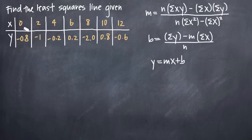So the way that this dataset is written, it tells us that when x is equal to 0, y is equal to negative 0.8. It's basically a set of coordinate pairs. So if x is 2 and y is negative 1, then we have the coordinate pair (2, -1), (4, -0.2), (6, 0.2), etc. So we have all these points, and they're not perfectly along a straight line.